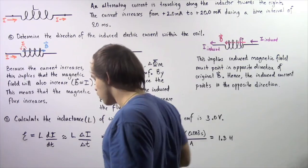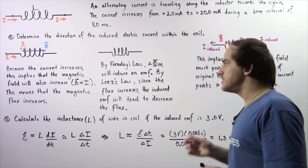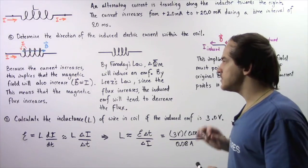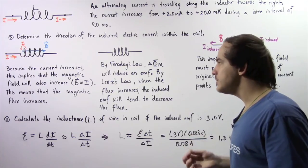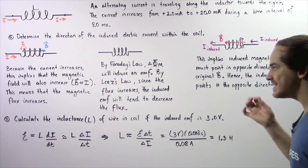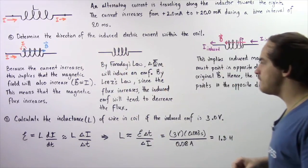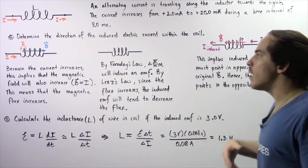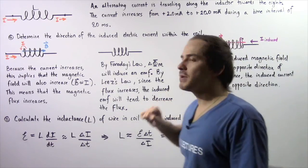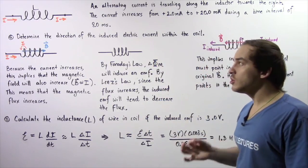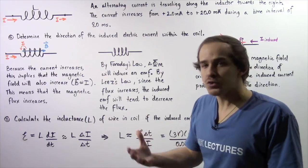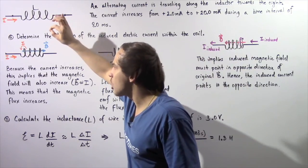Because our electric current is traveling in the given direction, our magnetic field B points through our loops of wire in a corresponding direction. Now let's apply Faraday's law. By Faraday's law, the change in magnetic flux within our coil will induce an EMF within that coil. By Lenz's law, since our magnetic flux is increasing as a result of the increase in magnetic field, the induced EMF will tend to oppose that change — that is, it will tend to decrease the magnetic flux.